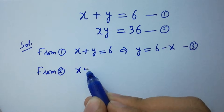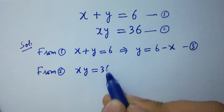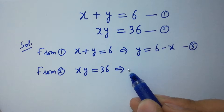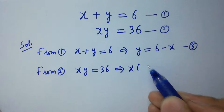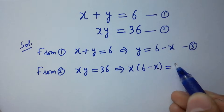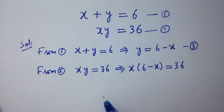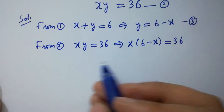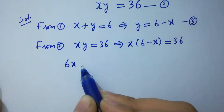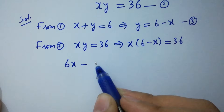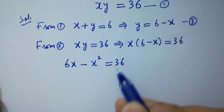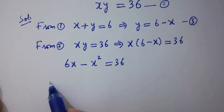From the second equation, x times y equals 36. Put the value of y: x times (6 minus x) equals 36. Simplifying, 6x minus x squared equals 36.